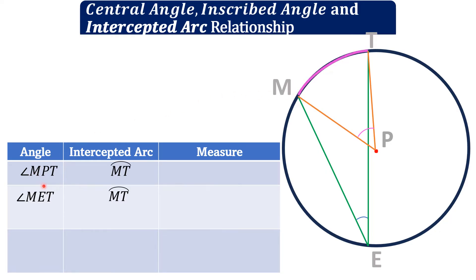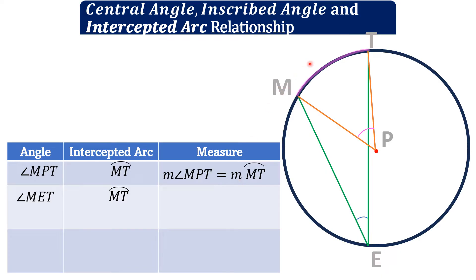How do we find the measure of angle MPT? Angle MPT is a central angle because its vertex is the center. To find its measure, it is equivalent to the measure of its intercepted arc. Therefore, the measure of angle MPT equals the measure of arc MT.